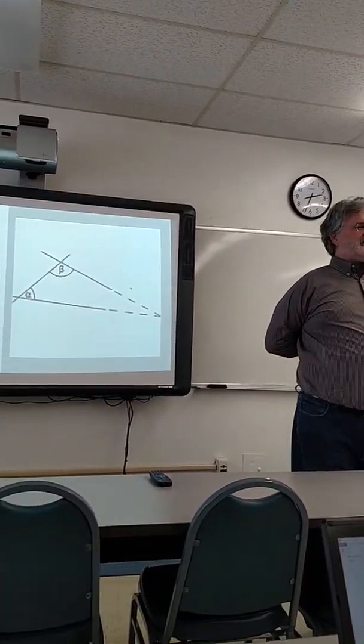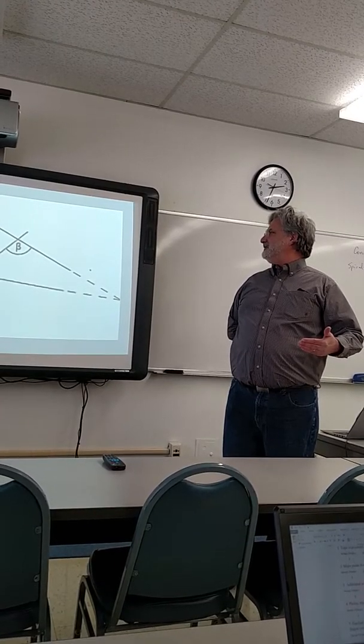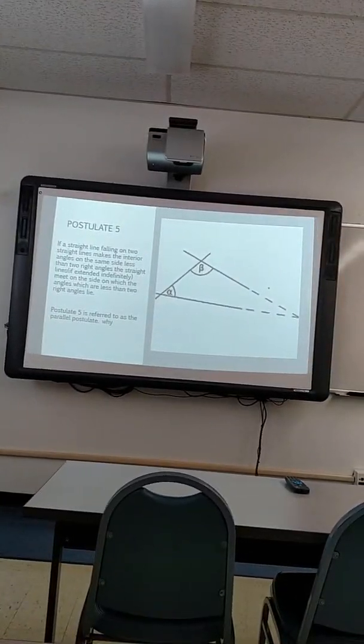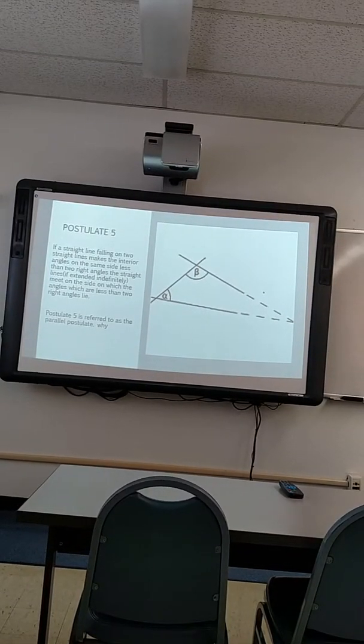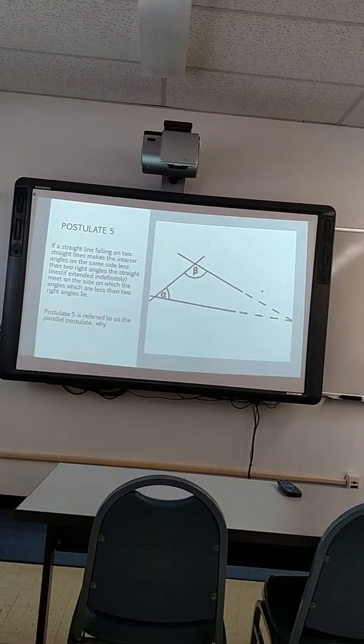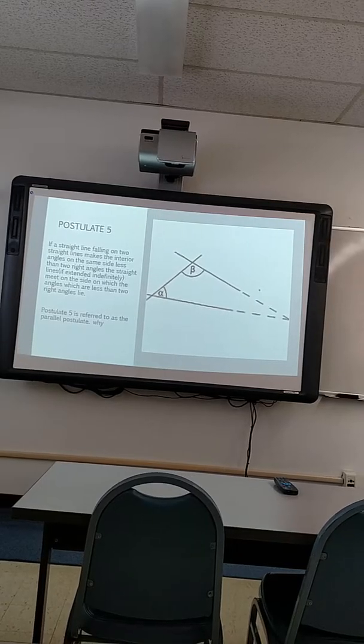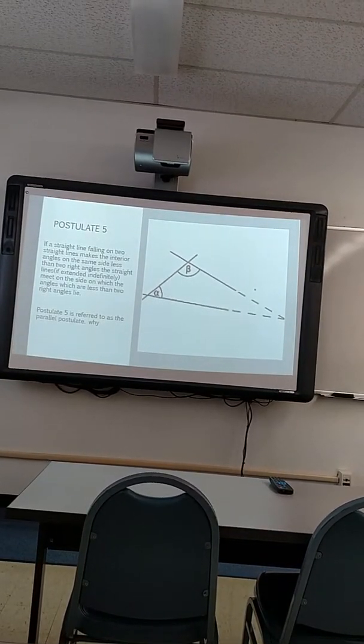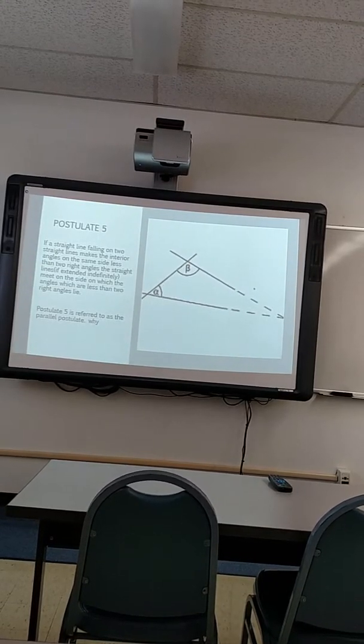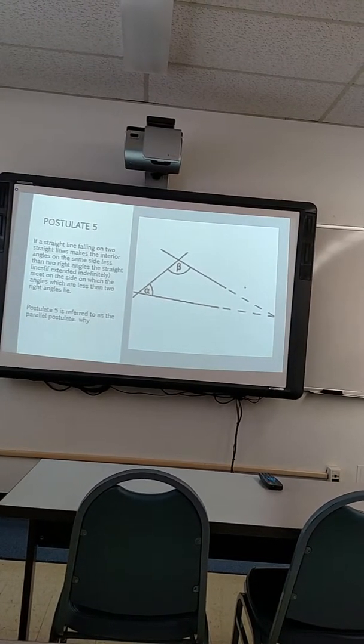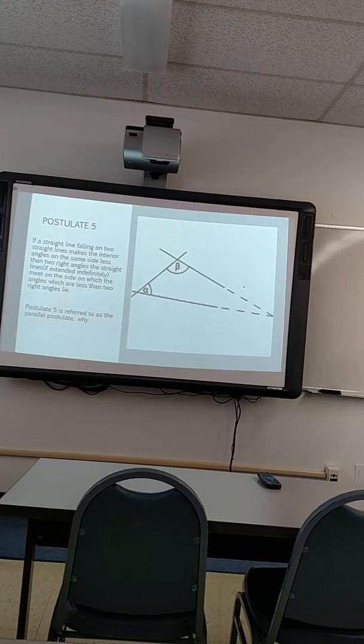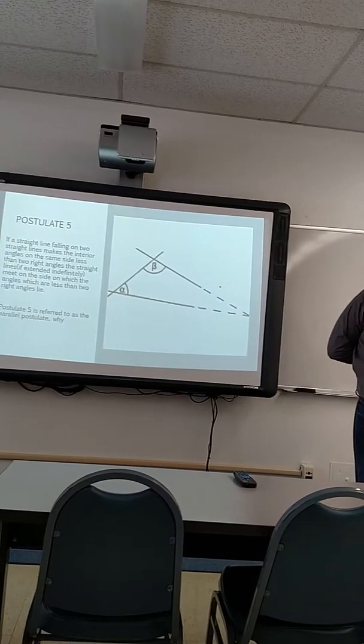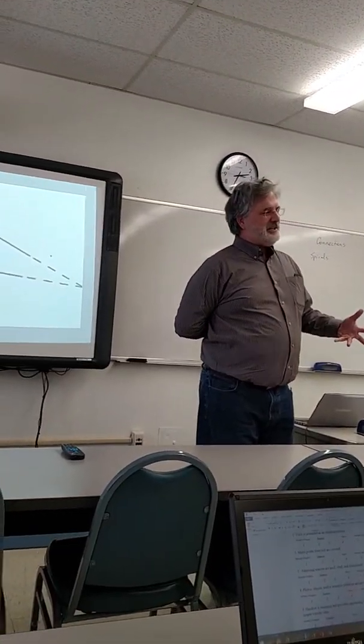Postulate five says: if a straight line falls on two straight lines, makes the interior angles on the same side less than two right angles, the straight lines, if extended indefinitely, meet on the side on which the angles which are less than two right angles. Okay, translate that into English.